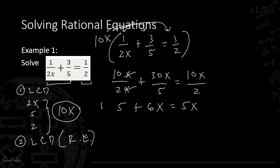Now that we have no more fractions, we proceed with the basic method of solving the equation. We have 5 plus 6x equals 5x. Using transposition — once a term crosses the equal sign, it changes to the reverse sign — we transpose 5x to the left: 5 plus 6x minus 5x.